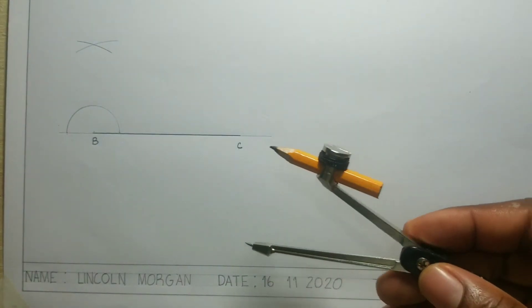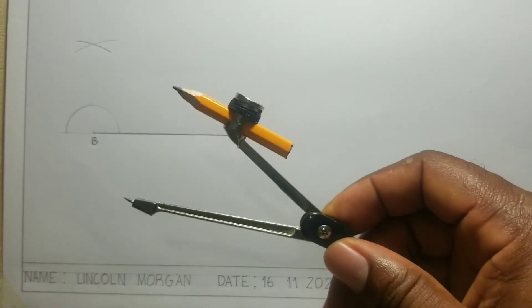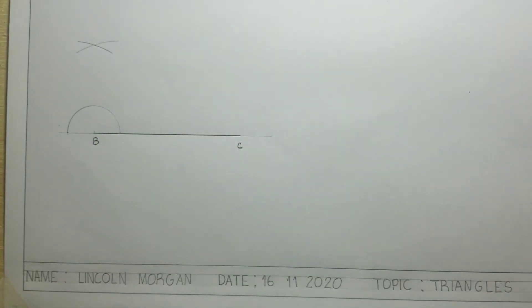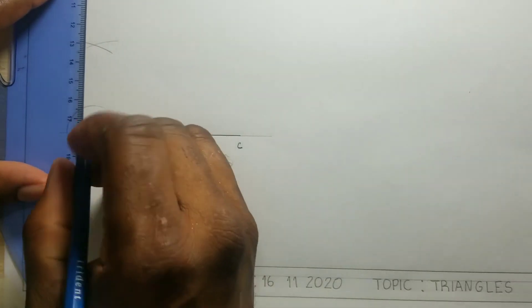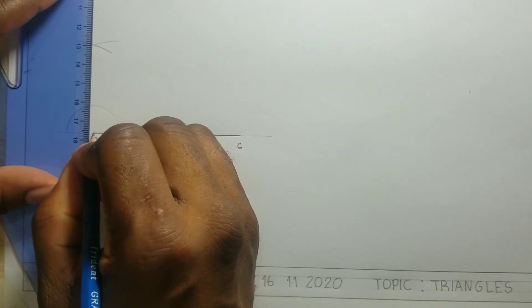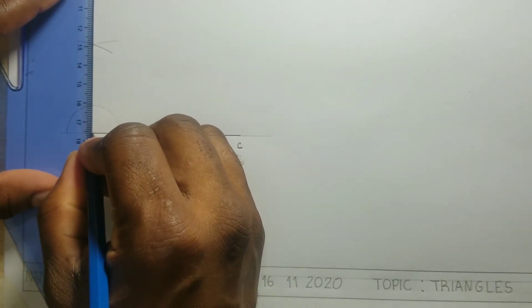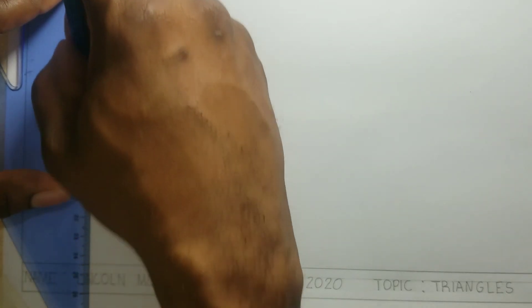From the intersection of the arcs, we will draw a line to point B.